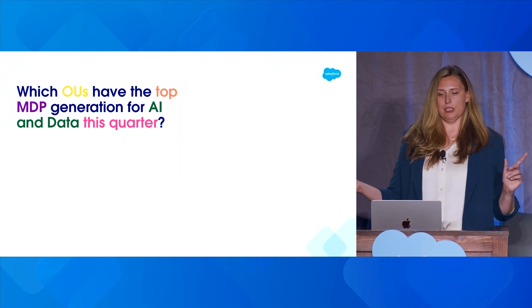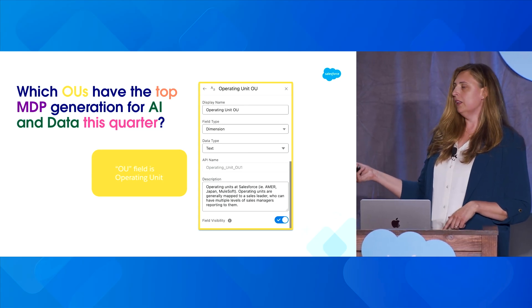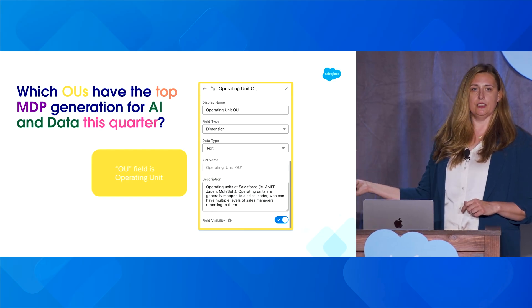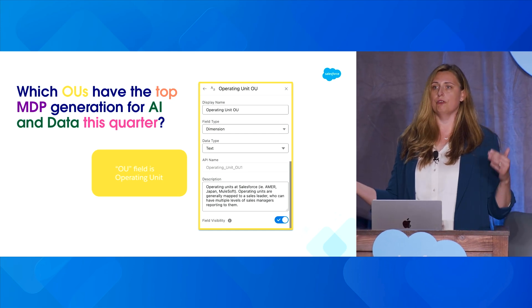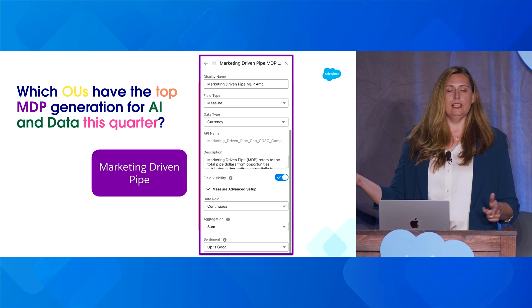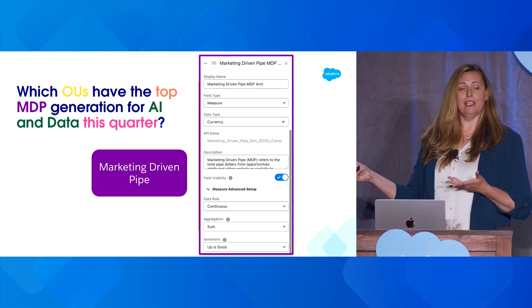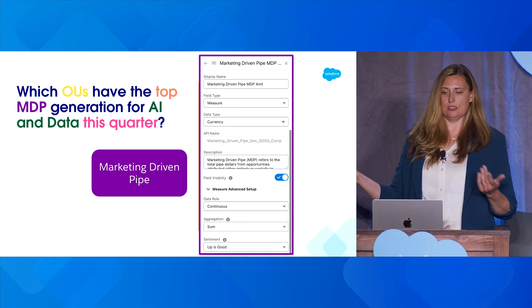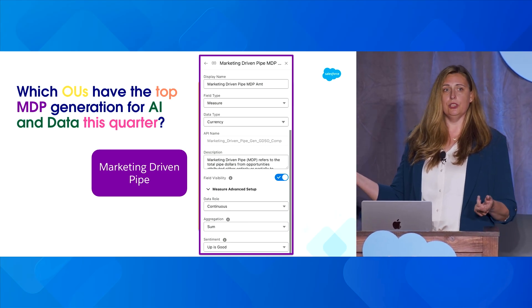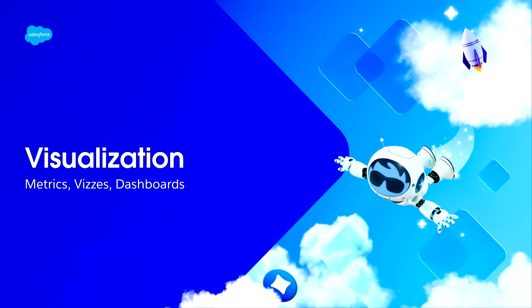Let's go back to that question Emmy shared: which OUs have the top MDP generation for AI data this quarter? To set up our data, we have our operating unit field with a clean name — it's a text field — and I've added a description saying it's a combination of region and sales leader used to identify our OU. For marketing-driven pipe amount, that's our currency measure. When you sum it, it's a continuous metric, and the more we generate, that's good — so we've set the sentiment as good. You can also build out parameters, calculations, and metrics in the semantic model.